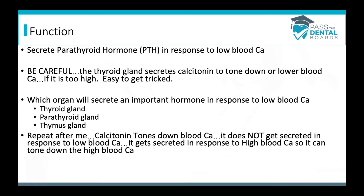Let's look at the function of this gland — a lot of confusing questions come from here. The job is to secrete parathyroid hormone in response to low blood calcium. Be careful: the thyroid gland's C cells secrete calcitonin, which tones down or lowers blood calcium if it's too high. On the exam, they'll ask which organ secretes a hormone in response to low blood calcium — don't pick the thyroid. Calcitonin is secreted in response to high blood calcium so it can tone down high blood calcium.